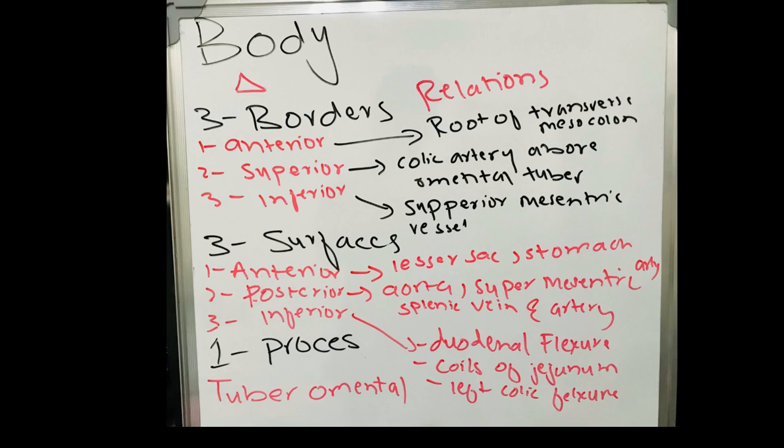The body of the pancreas is considered triangular because it has three borders and three surfaces. The three borders are the anterior, superior, and inferior borders. The anterior border is related to the root of the transverse mesocolon, the superior border is related to the colic artery above the omental tuber, and the inferior border is related to the superior mesenteric vessels. The anterior surface is related to the lesser sac and stomach, the posterior surface is related to the aorta, splenic vein, and superior mesenteric artery, and the inferior surface is related to the duodenal flexure, coils of jejunum, and left colic flexure.